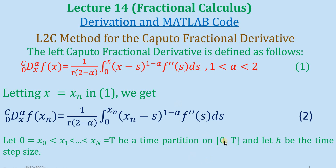We have an interval from 0 to capital T, and I have made a time partition of this interval as you can notice here. The initial point is x_0, which is equal to 0, and the final point is x_N, which is equal to capital T. We have N plus 1 grid points, and the small h stands for the constant time step size.